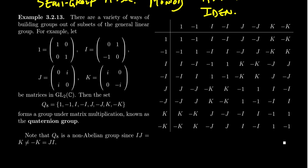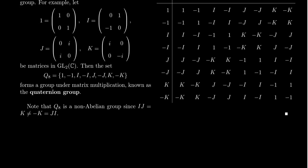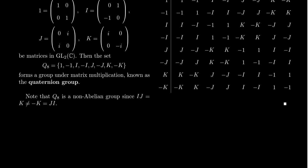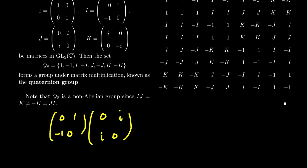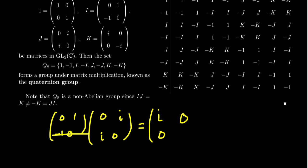Let's see what happens when you do I times J. If you take the matrix I = [0, 1; -1, 0] and multiply it by J = [0, i; i, 0], going through the usual matrix product: first row times first column gives i, first row times second column gives 0, second row times first column gives 0, second row times second column gives -i. That gives the matrix [i, 0; 0, -i], which is exactly K.